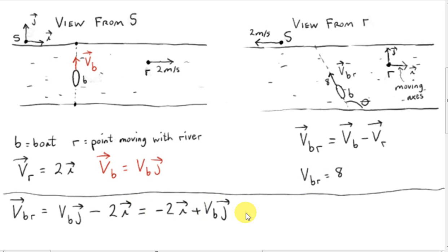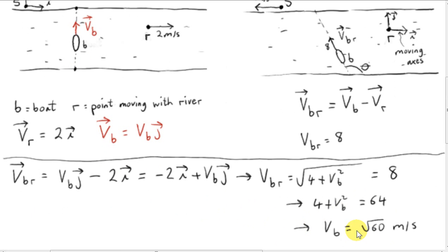We normally write the I component first, so we write VBR as minus 2I plus VBJ. Then we use the fact that the magnitude of the vector is 8. So let's get the magnitude of vector VBR. So we just use Pythagoras. 2 squared is 4, and then we have VB squared. And this must equal 8. So from this we can calculate VB, square both sides. So we get VB equals root 60. So now we have vector VBR fully specified. It's minus 2I plus root 60J. To two decimal places, VB is 7.75 meters per second.